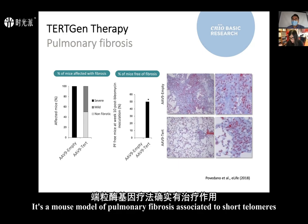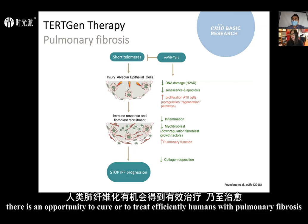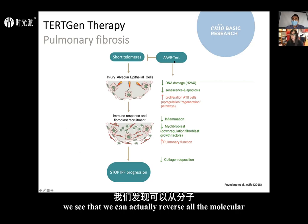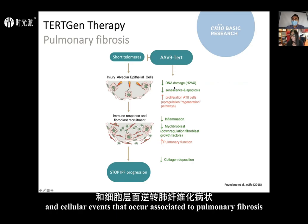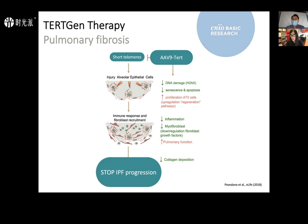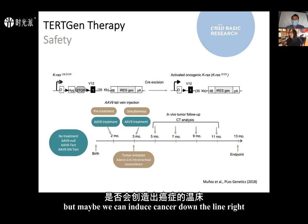We think this means there is an opportunity to cure or efficiently treat humans with pulmonary fibrosis using a telomerase gene therapy strategy. In mouse models we can actually reverse all the molecular and cellular events associated with pulmonary fibrosis and stop its progression. One concern was whether we might cure fibrosis but induce cancer downstream, since telomerase is also needed by cancer cells to produce a tumor.